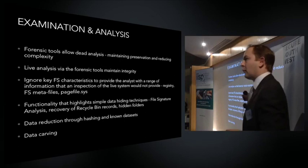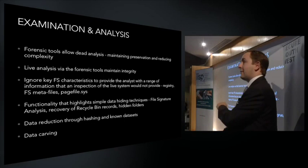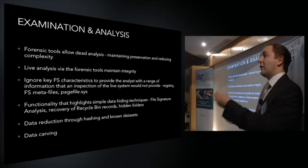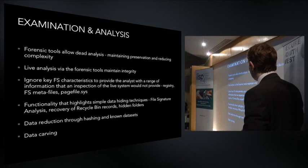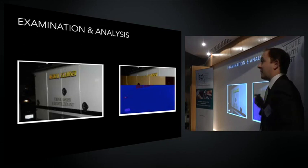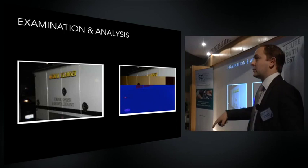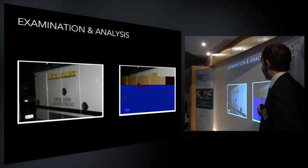Outside of the file system processes, forensic software also allows you to do something called data carving, which gives you access to data you'd never be able to get through live analysis. It simply ignores the file system and goes through literally the zeros and ones, looking for particular signatures of files. Wherever it finds them, it grabs and carves that data out. The file system no longer has any record of this data — your live system analysis would never give you this data — and it's only through a forensics process of data carving that you gain access to it.